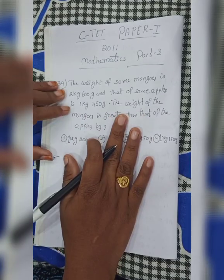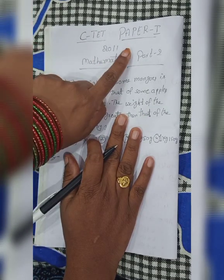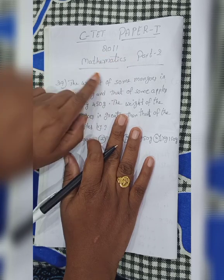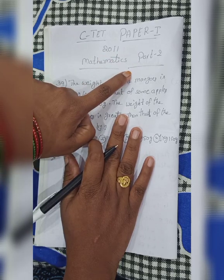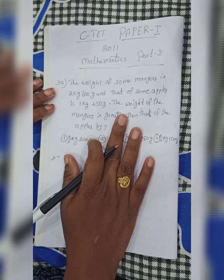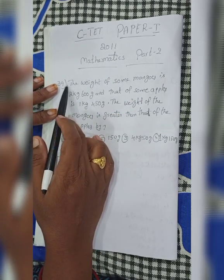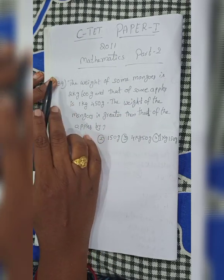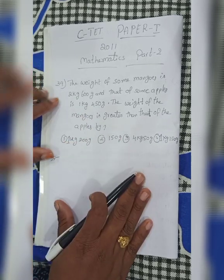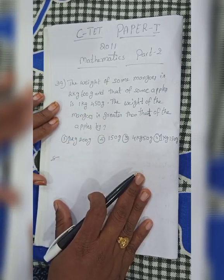Hi viewers. This is ICSE Paper 1, 2011, Mathematics Part 2. In the previous classes, other sums were explained. Now here, sum number 39 is explained.